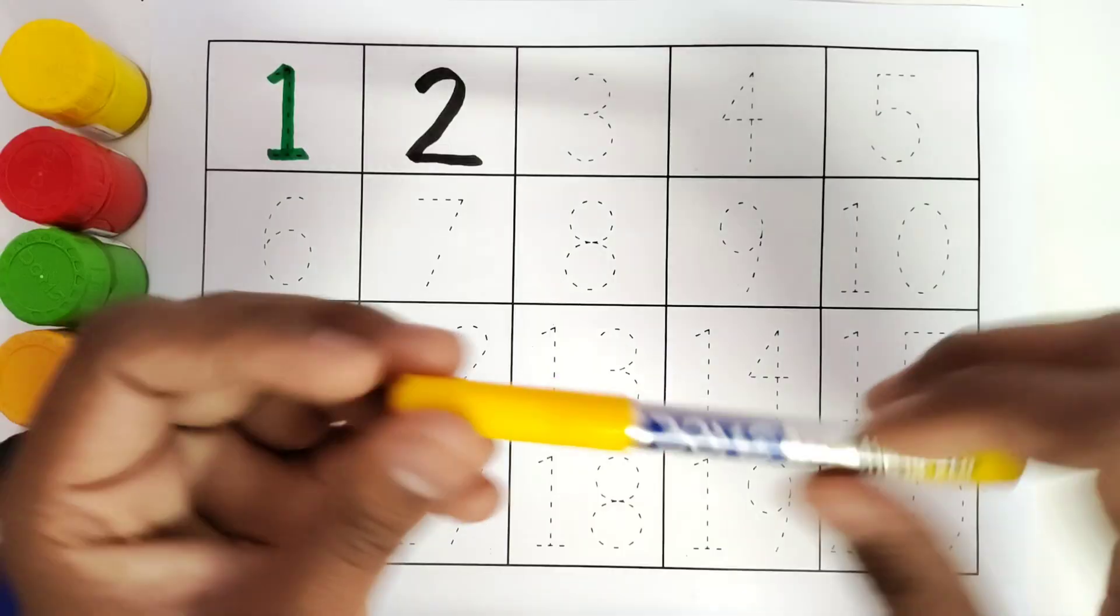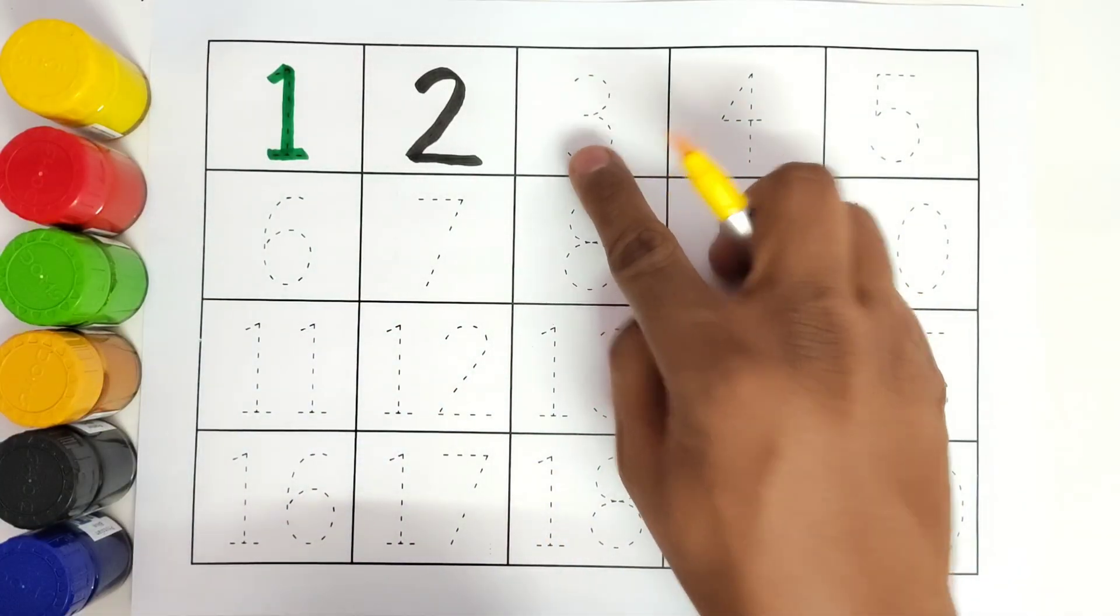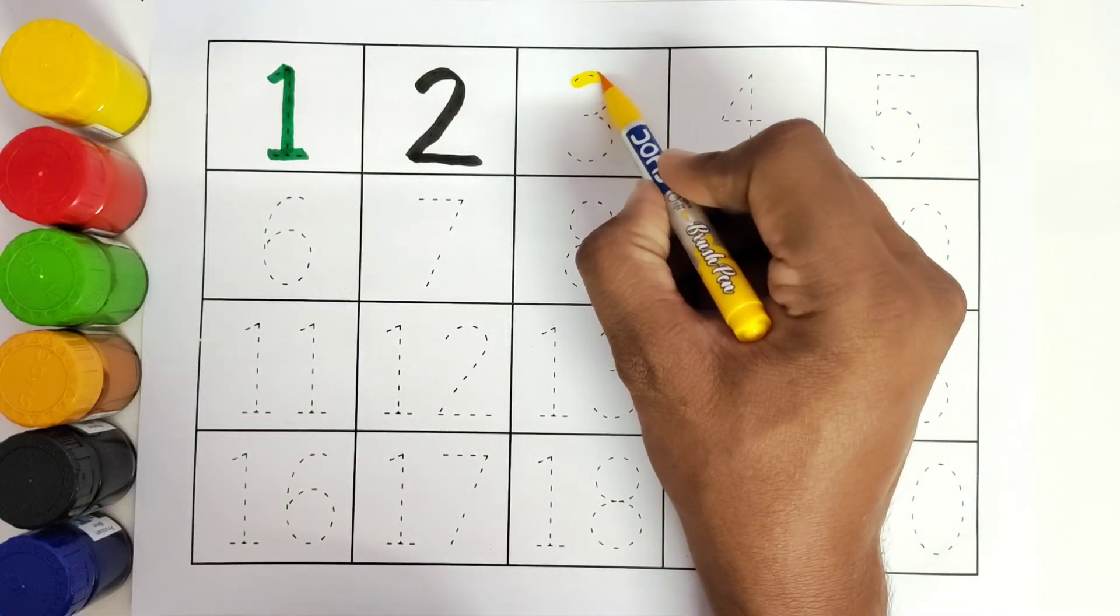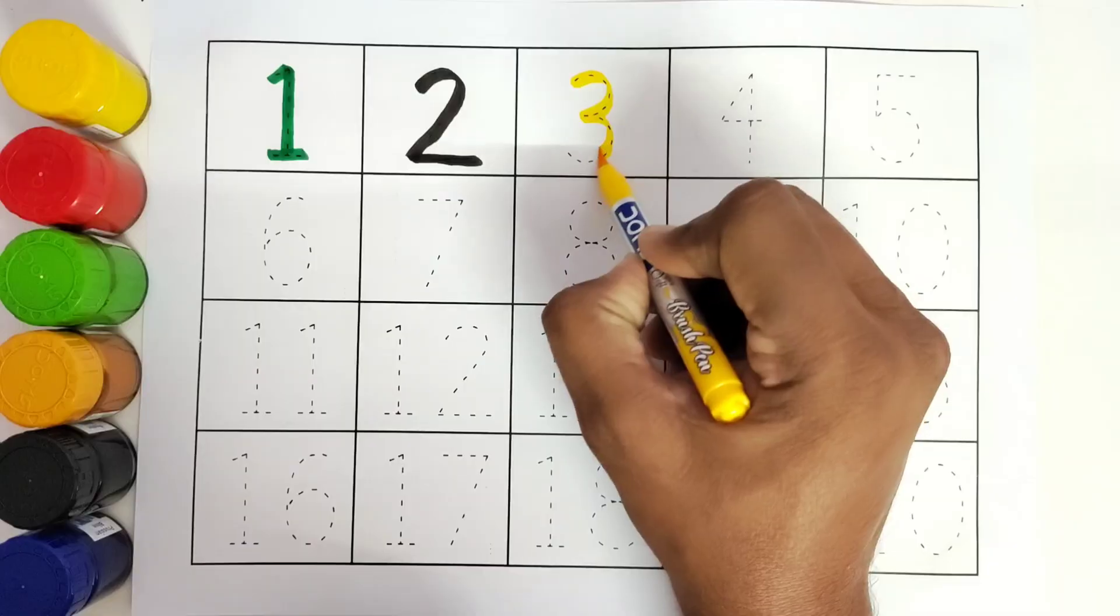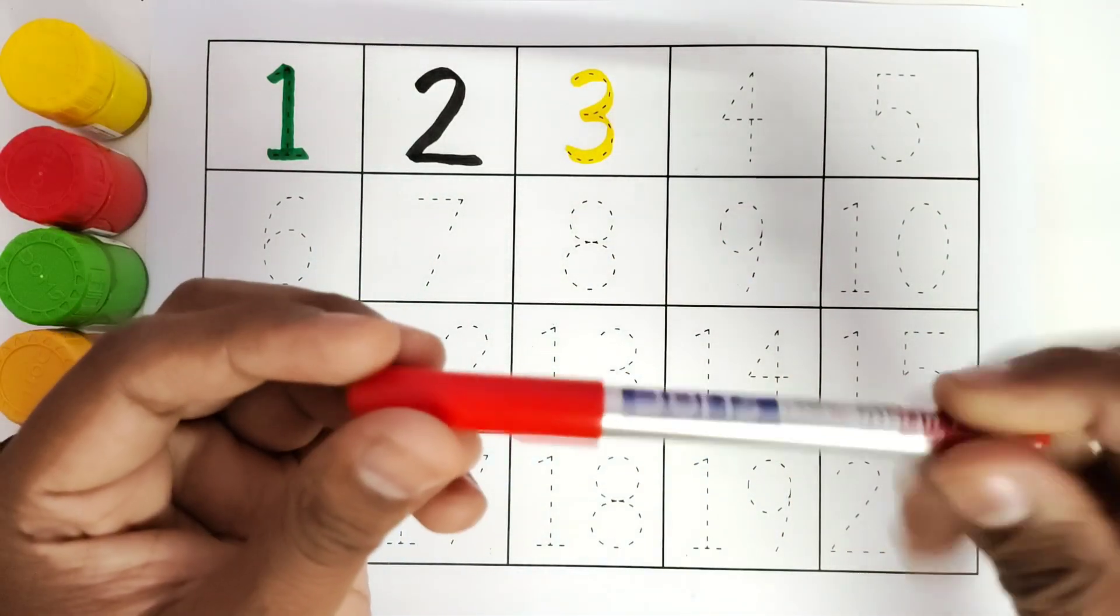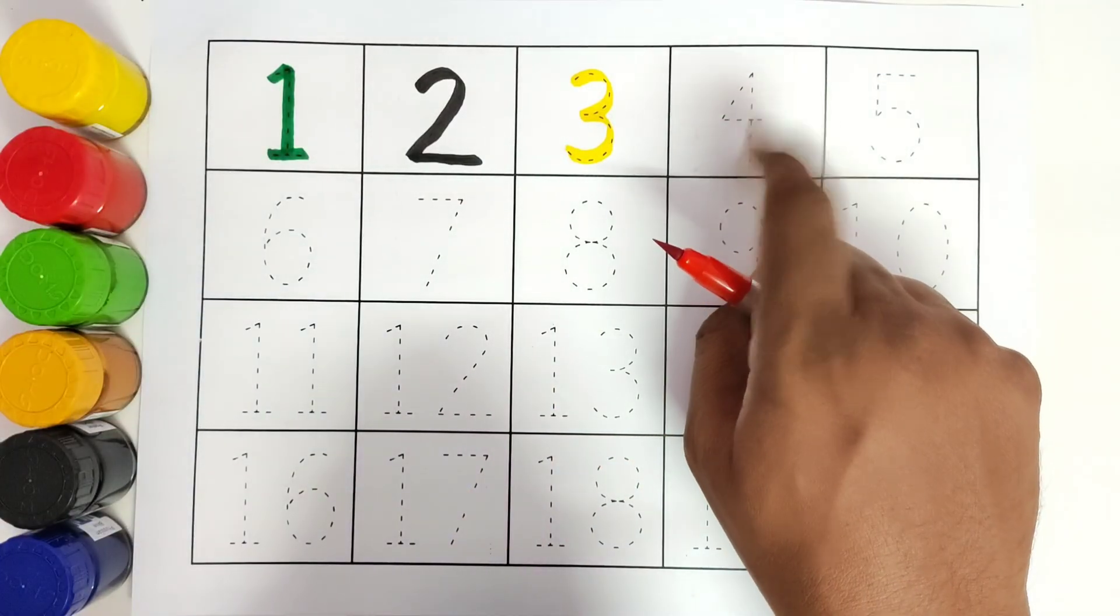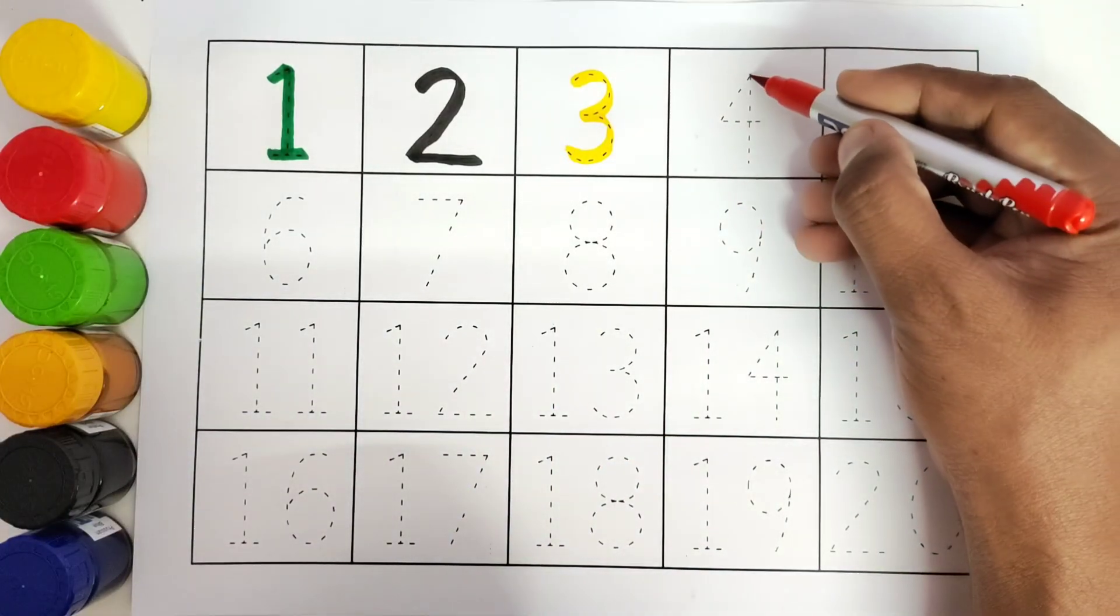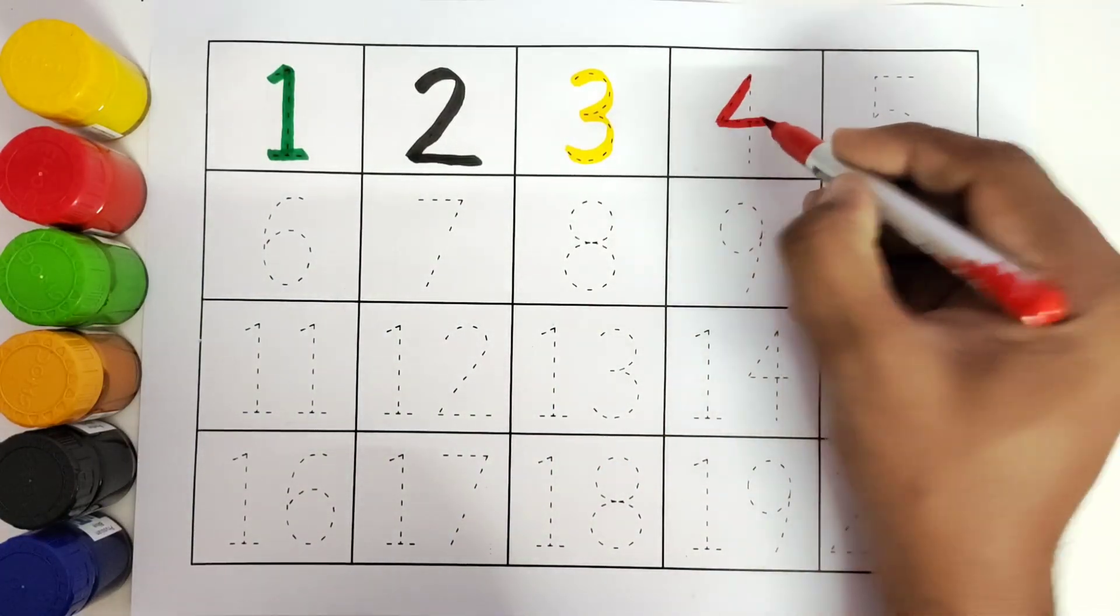This is yellow color. Number 3. We will trace the number 3. This is red color. Number 4. We will trace the number 4.